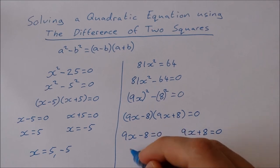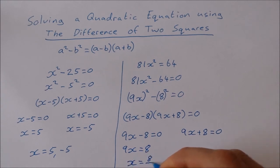Add 8 to both sides, 9x equals 8. Divide both sides by 9, x equals 8 over 9.